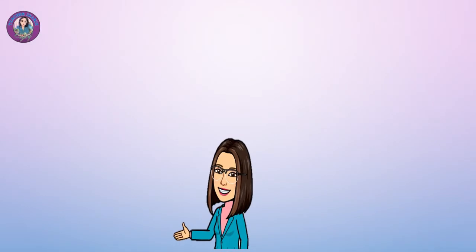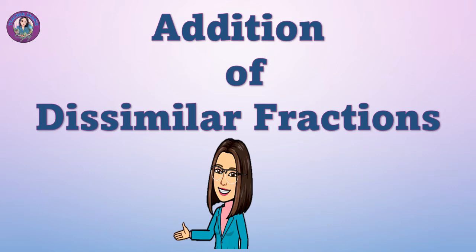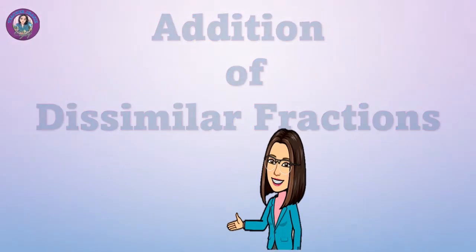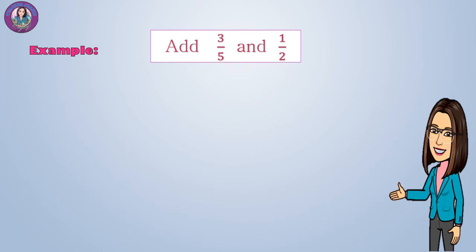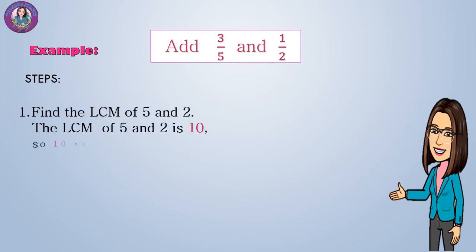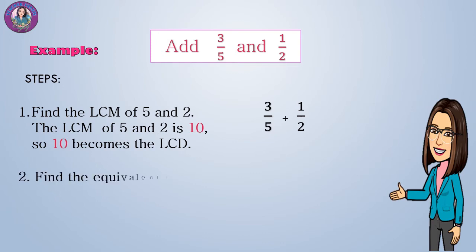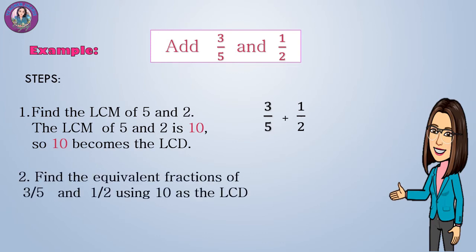Let's learn the addition of dissimilar fractions. Example: add three-fifths and one-and-one-half. Step 1: find the LCM of 5 and 2. The LCM of 5 and 2 is 10, so 10 becomes the LCD. Find the equivalent fractions of three-fifths and one-half using 10 as the LCD. Their equivalent fractions are six-tenths plus five-tenths.